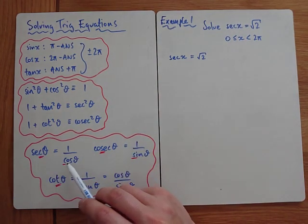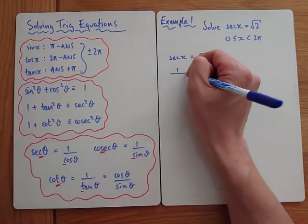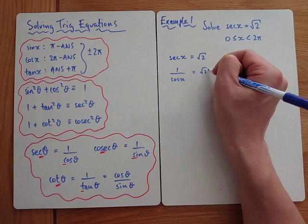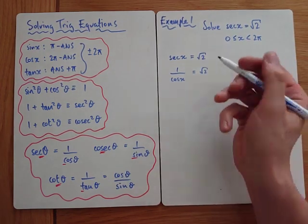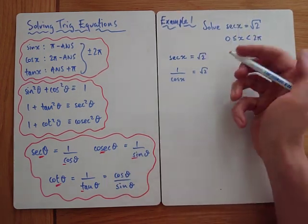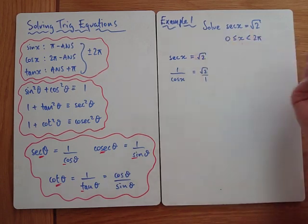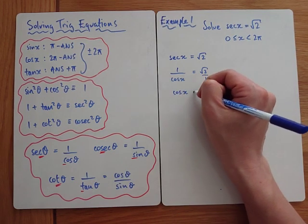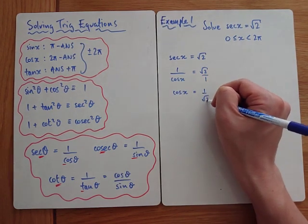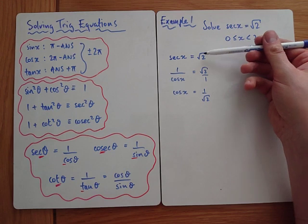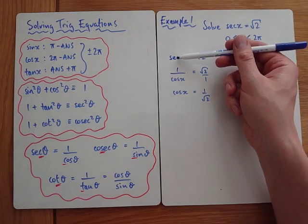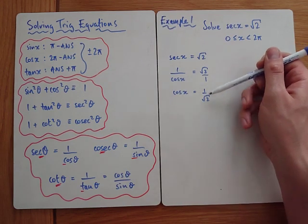Sec is the same as 1 over cos, so that would be 1 over cos x equals root 2, which rearranges to cos x equals 1 over root 2. To be honest, with a lot of practice on this topic you will skip from sec equals a value straight to cos being the reciprocal of that value — there's no harm in jumping that step.